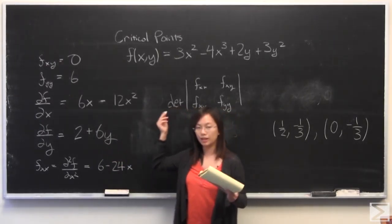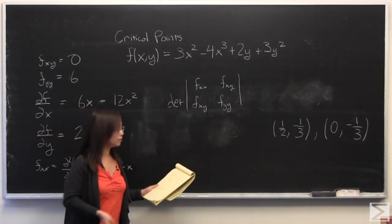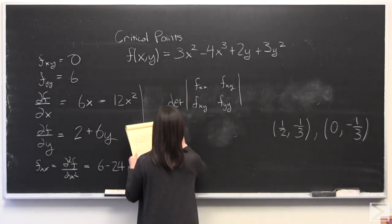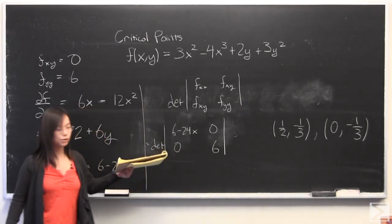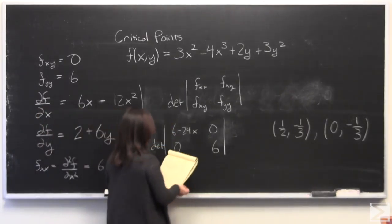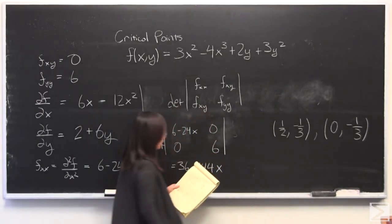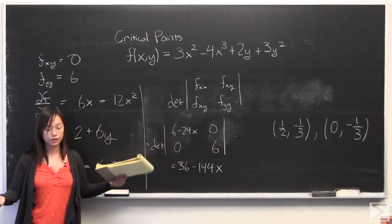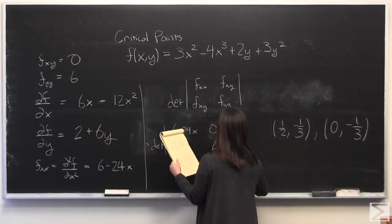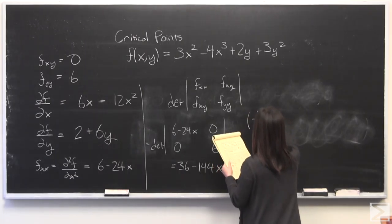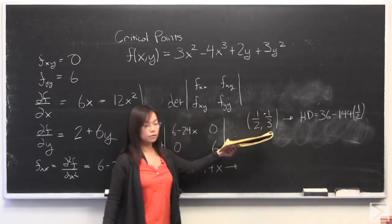Very simply, the second partial derivative with respect to x is 6 minus 24x. The rest are very simple too, because the polynomial we were given is a rather simple one. Then I'm going to evaluate the determinant. This is very simple because two of the terms are 0, so all we have is 36 minus 144x. We are going to plug in the values of the critical points to identify what kind each one is.